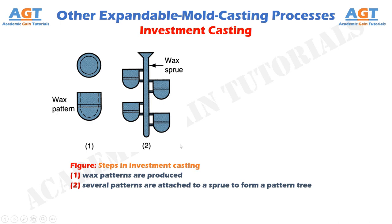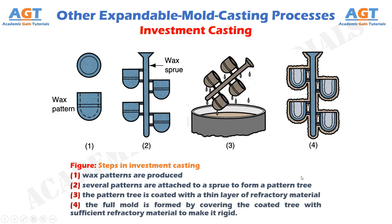Figure 3 shows the third step in the investment casting process, where the pattern tree is coated with a thin layer of refractory material. Figure 4 shows the fourth step, where the full mold is formed by covering the coated tree with sufficient refractory material to make it rigid.